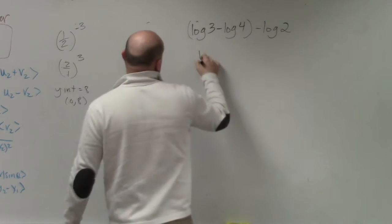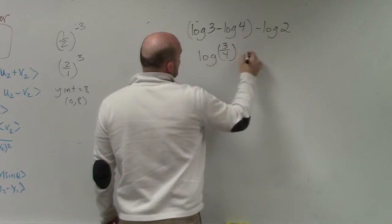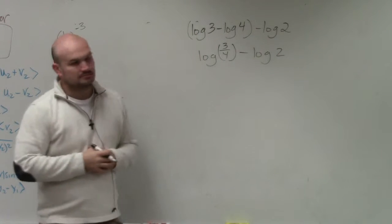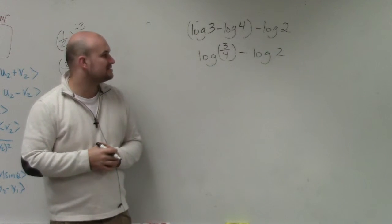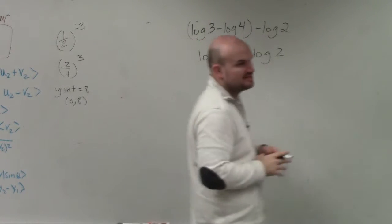So I can rewrite this as log of 3 over 4 minus log of 2. That's supposed to be a 4. It's a bad 4. Does everybody see what I did?